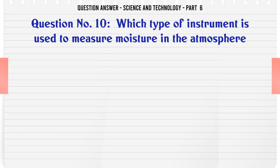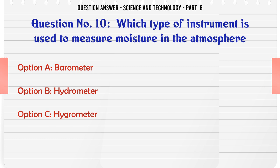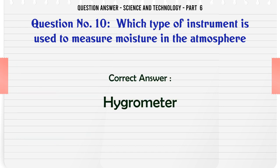Which type of instrument is used to measure moisture in the atmosphere? A. Barometer. B. Hydrometer. C. Hygrometer. D. None of the above. The correct answer is Hygrometer.